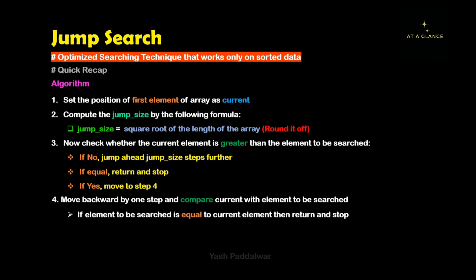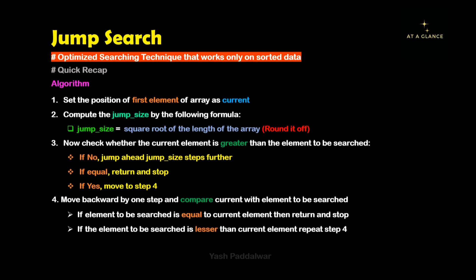Step 4 says that we need to move backward one by one and compare every current element with the element to be searched. If they are equal, we return the current position and stop. If they are not equal, we move backward by one. Finally, you will find the element. This is how jump search algorithm works.